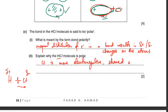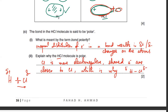In HCl, the shared electrons are closer to Cl — which is why Cl has a slight negative charge (δ−) and H has a slight positive charge (δ+).